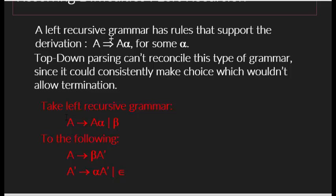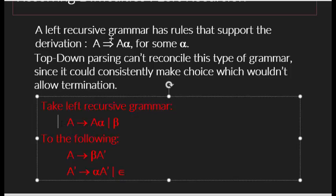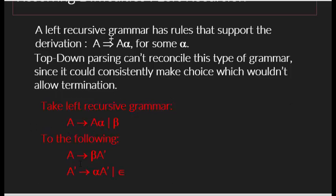When you have a grammar where the variable appears as the leftmost symbol on the right-hand side, the grammar is recursive and we have to remove it by transforming it. The transformation gives us: A goes to beta A-prime, where A-prime is a new symbol.